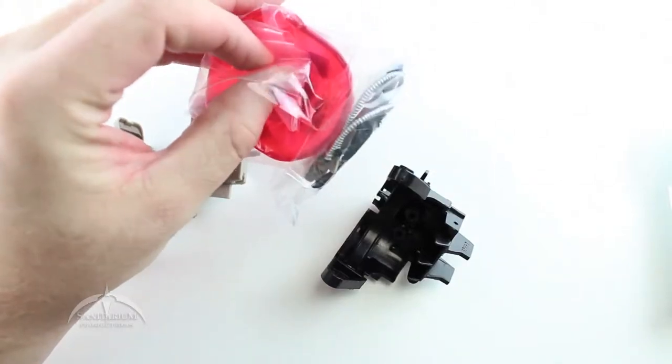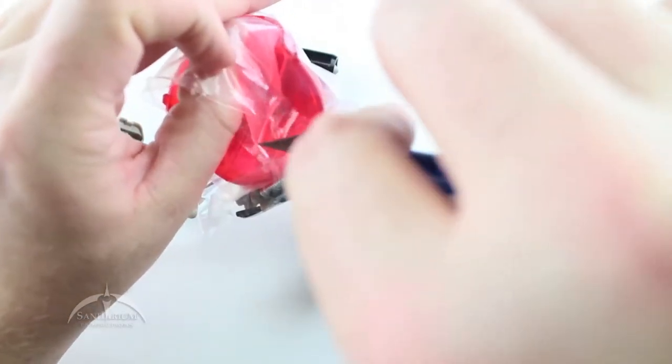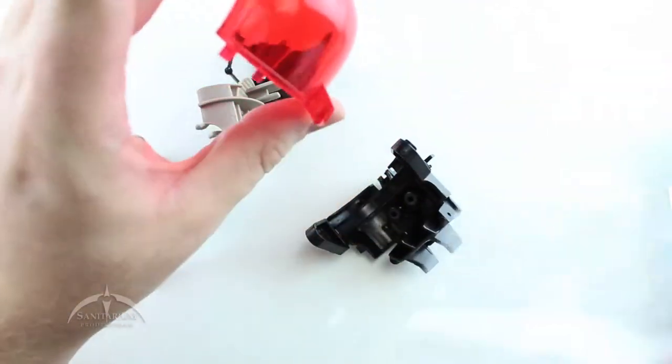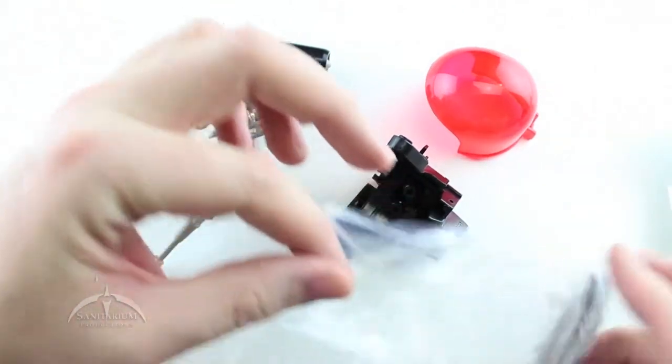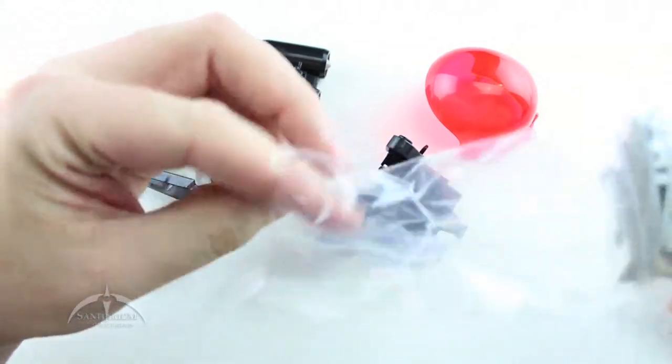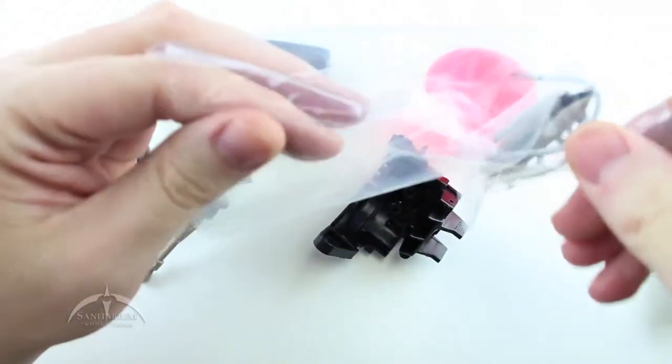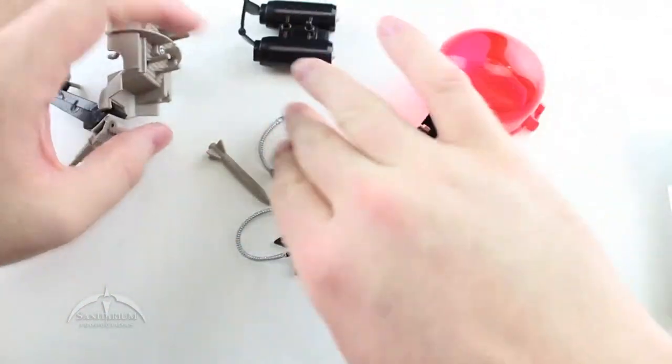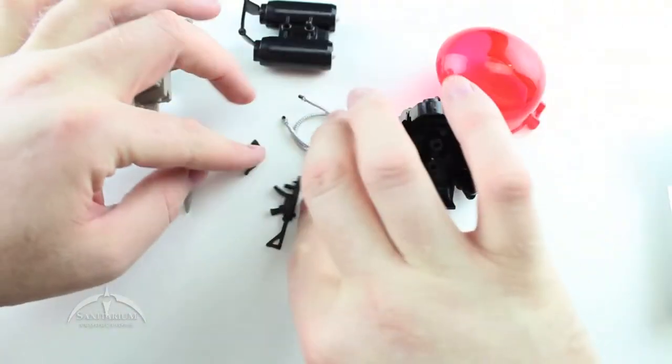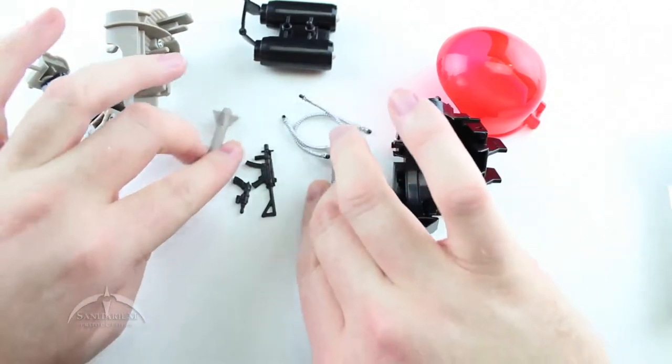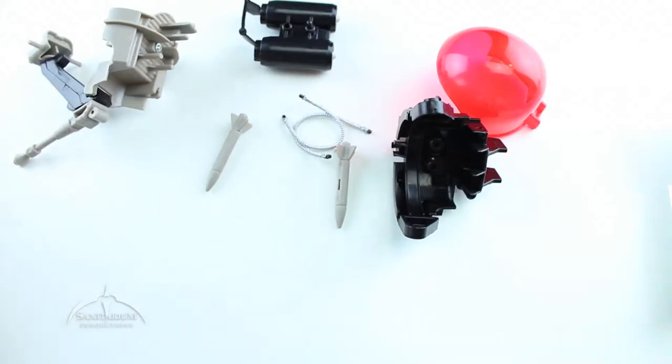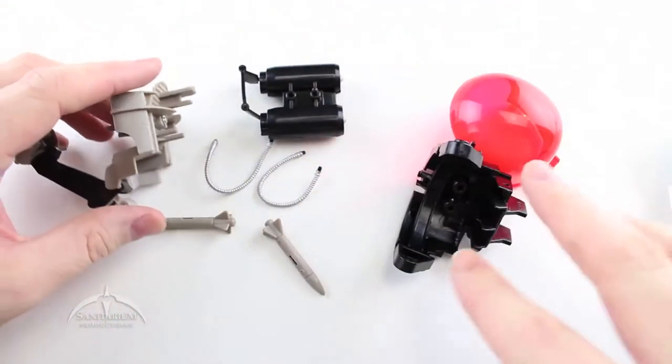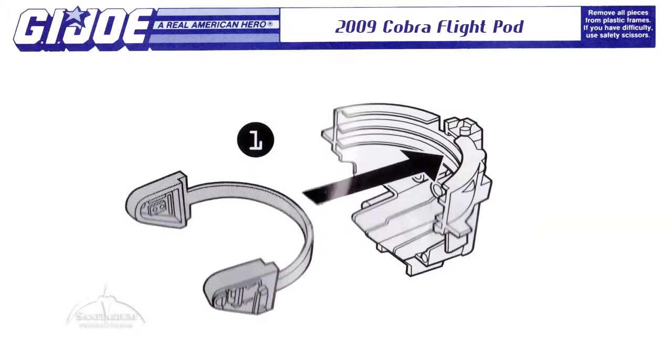Now we're zoomed in a little bit closer. Let's open up this accessory bag. Inside we have the actual canopy piece, nice red shade, and then we have all the other little bits and pieces. What was in there was two hoses, two weapons for the figure, and two missiles. We'll slide the weapons off to the side for now.